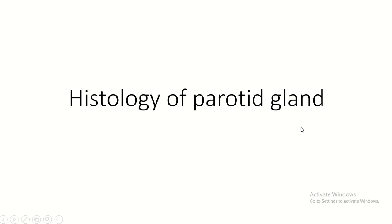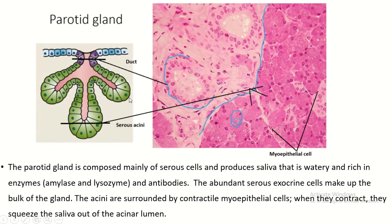Welcome to the human anatomy channel. In this video I discuss histology of the parotid gland. The parotid gland is a pure serous salivary gland. It has ducts and serous acini. Cross sections of the duct look like this — the staining of the duct is less than the serous acini.